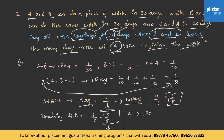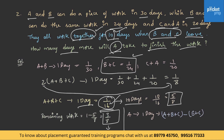Let us find A's one day work by subtracting B plus C's work from the total. A plus B plus C's one day work is 1 by 16 and B plus C's one day work is 1 by 24. Therefore 1 by 16 minus 1 by 24 equals 1 by 48 — this is the work done by A in 1 day. Then 3 by 8 of work will be done in 48 into 3 by 8, that is 18 days. This is the answer.